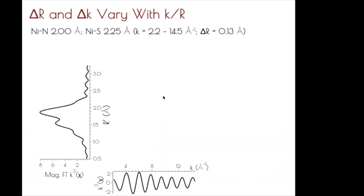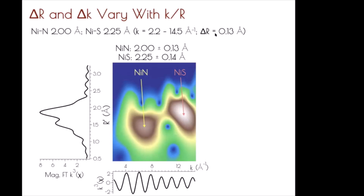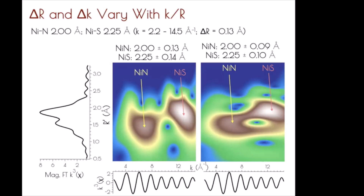To show simulations of data and how those parameters influence us, I simulated a nickel-nitrogen and a nickel-sulfur bond length over a specific K range, giving us a delta R of 0.13 angstroms. If we do that Morlet transform keeping the delta R about the same as what you'd get from a traditional Fourier transform analysis, we can really nicely distinguish between the nickel-nitrogen and the nickel-sulfur scatterer. As you increase resolution in R space, you lose it in K space, making it more difficult to distinguish between scatterer types.